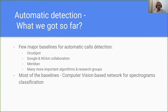So what do we have so far? A few major baselines for automatic detection. Worth mentioning are OrcaSpot, a Google and Node collaboration, Meridian, and many more important algorithms and research groups. Most of these baselines are computer-vision-based networks for spectrogram classification.